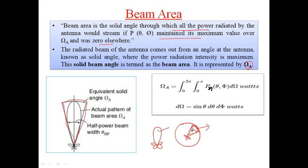The radiated beam of the antenna comes out from an angle at the antenna — the particular angle from which the radiation is coming out is called the solid angle, where power radiation intensity is maxima. As you can clearly see from the diagram, in this area we have maxima radiation, in other directions we have minima, and in some areas we have null radiation. For the calculation of beam area we consider the main part completely, and also include the areas with small amounts of radiation — all of this together is called the total beam area.